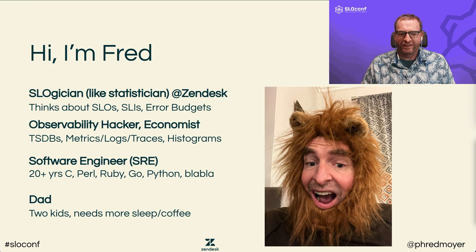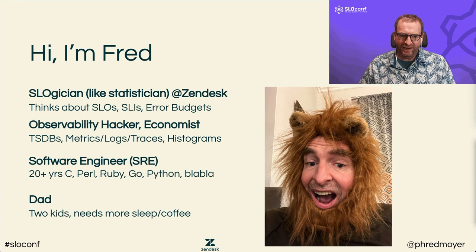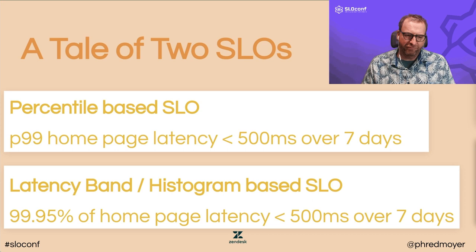I'm Fred. I'm a "slowgician" — like a statistician — at Zendesk. I think a lot about SLIs, SLOs, and error budgets. I like to hack on observability things. I've been doing the programming thing for a while, and I definitely need more sleep and coffee.